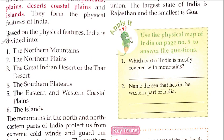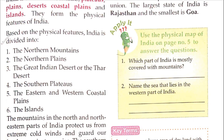Based upon the physical features, India is divided into 6 parts: 1) The Northern Mountains — meaning the northern hills; 2) The Northern Plains; 3) The Great Indian Desert, also known as the Thar Desert; 4) The Southern Plateaus; 5) The Eastern and Western Coastal Plains — meaning coastal plains near the sea; 6) The Islands.